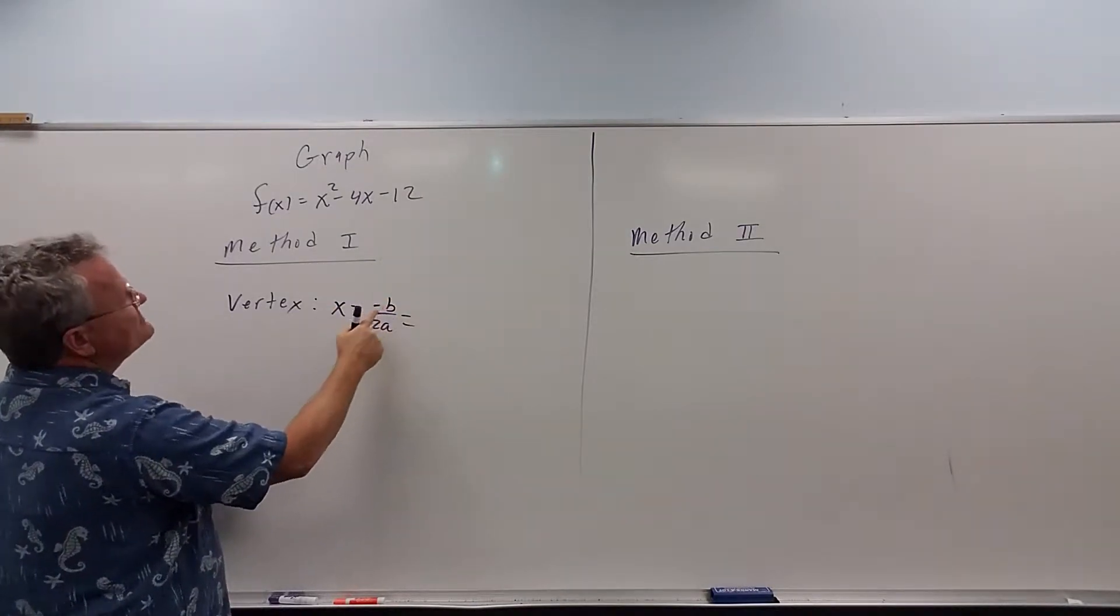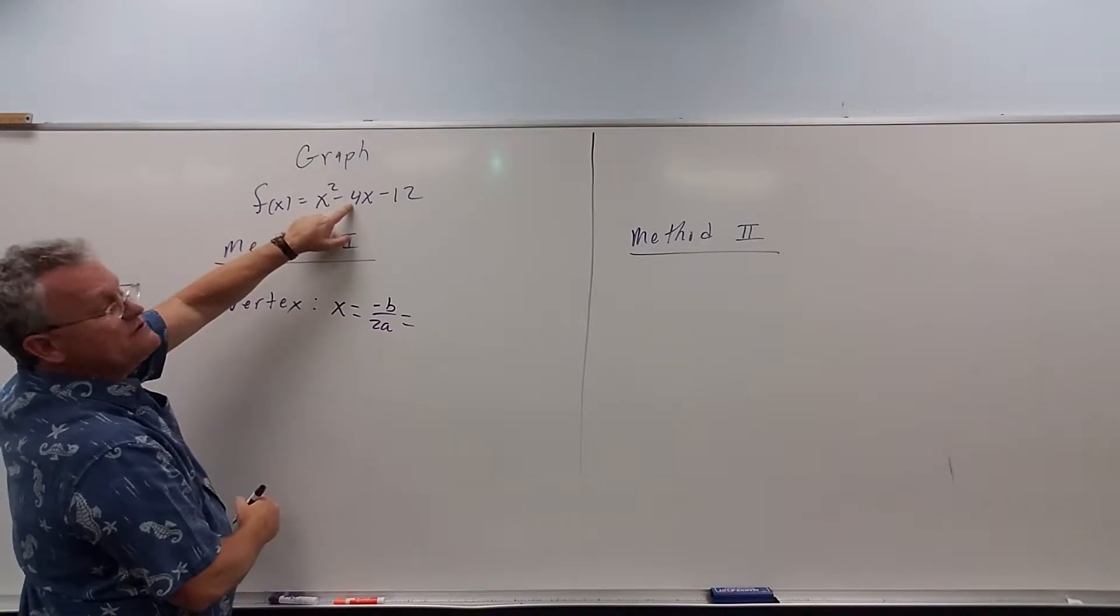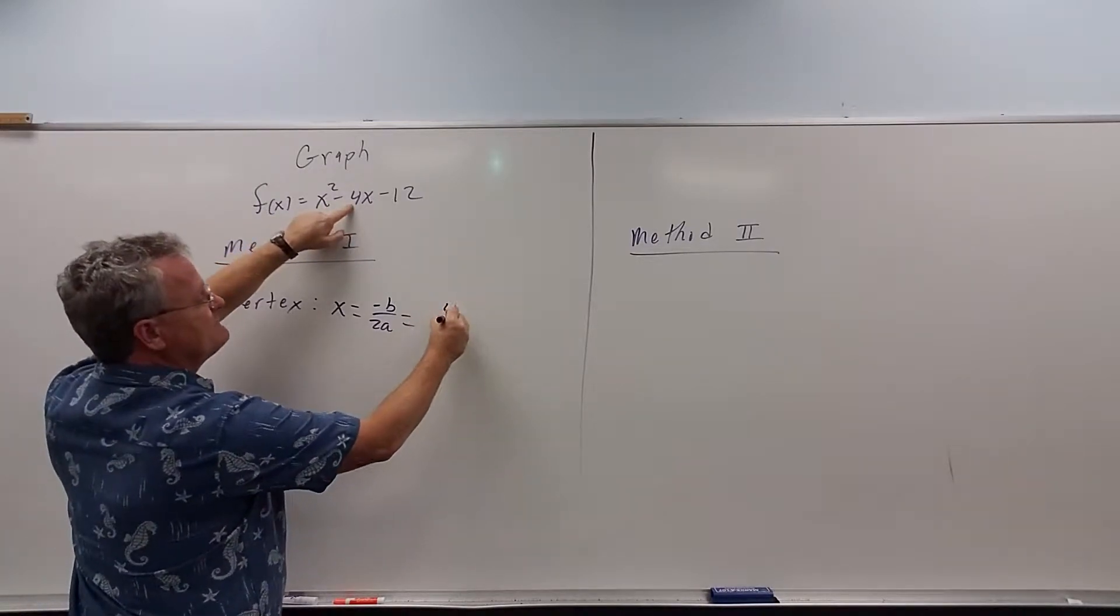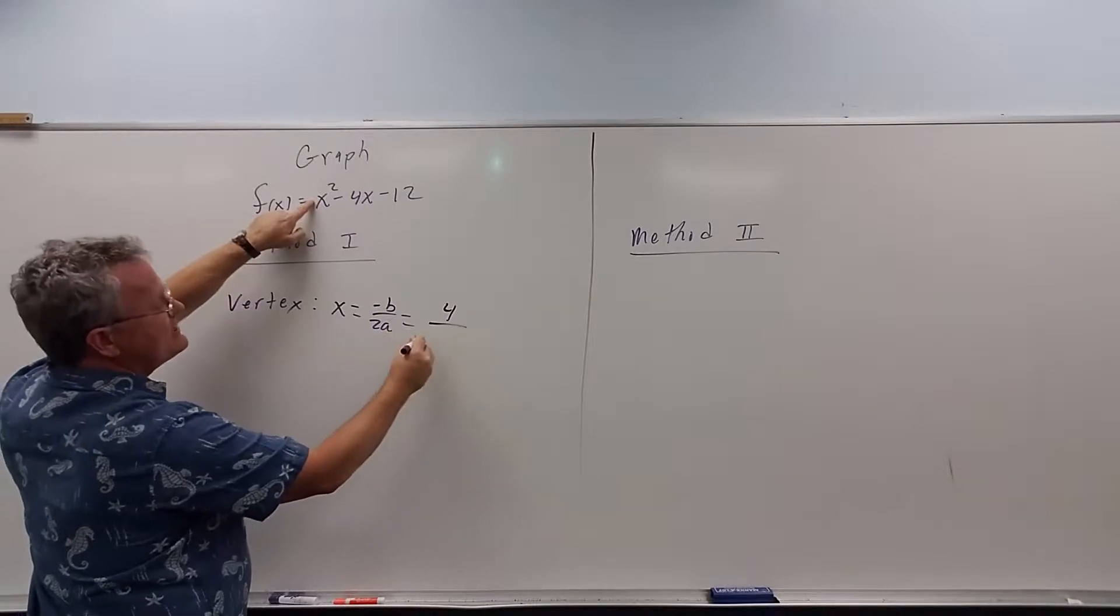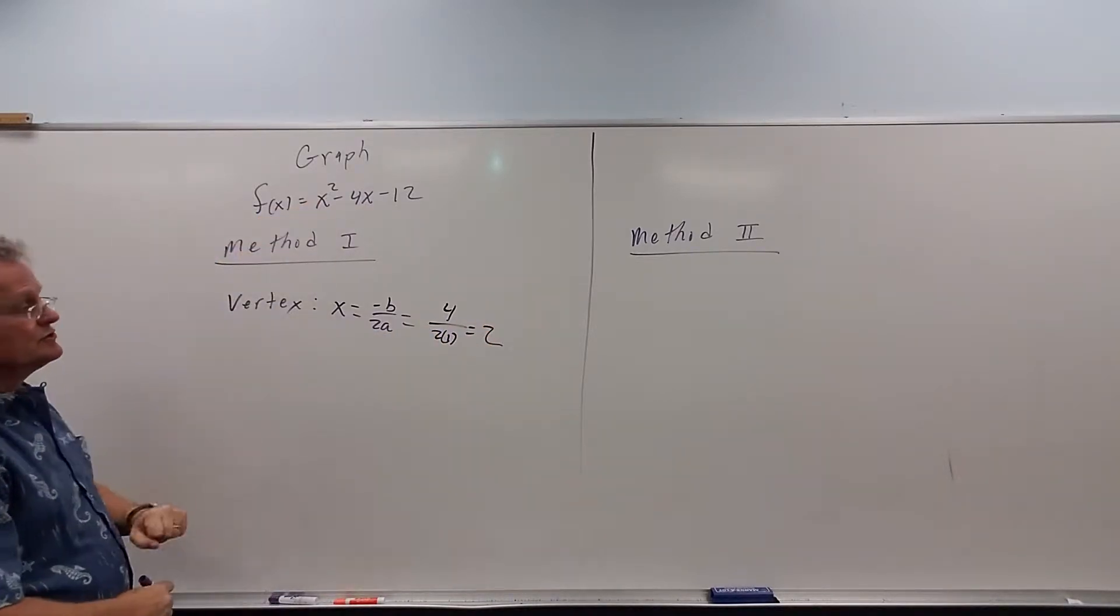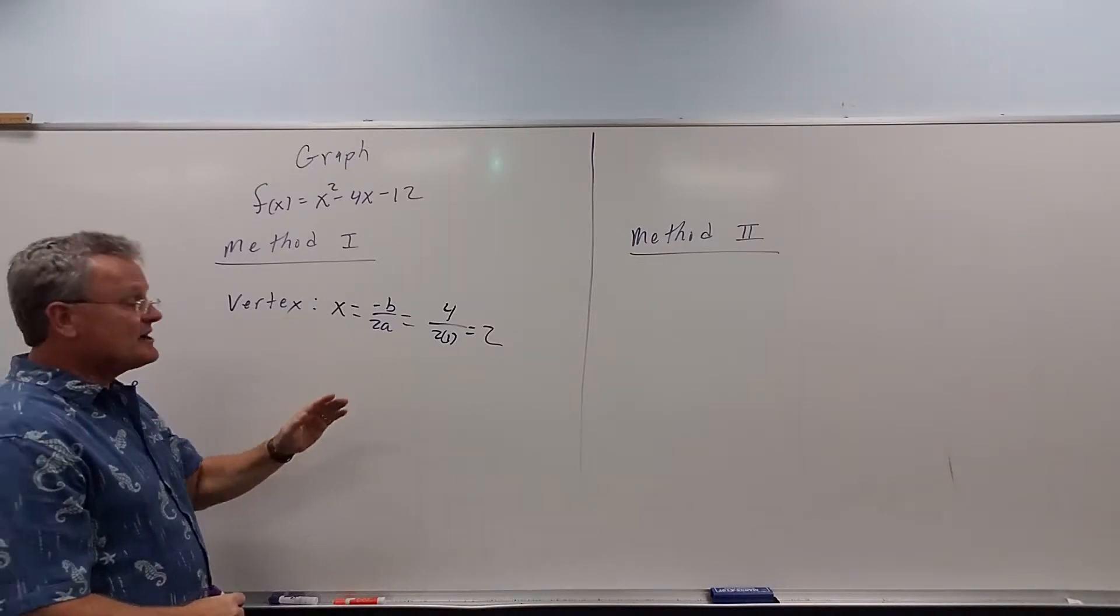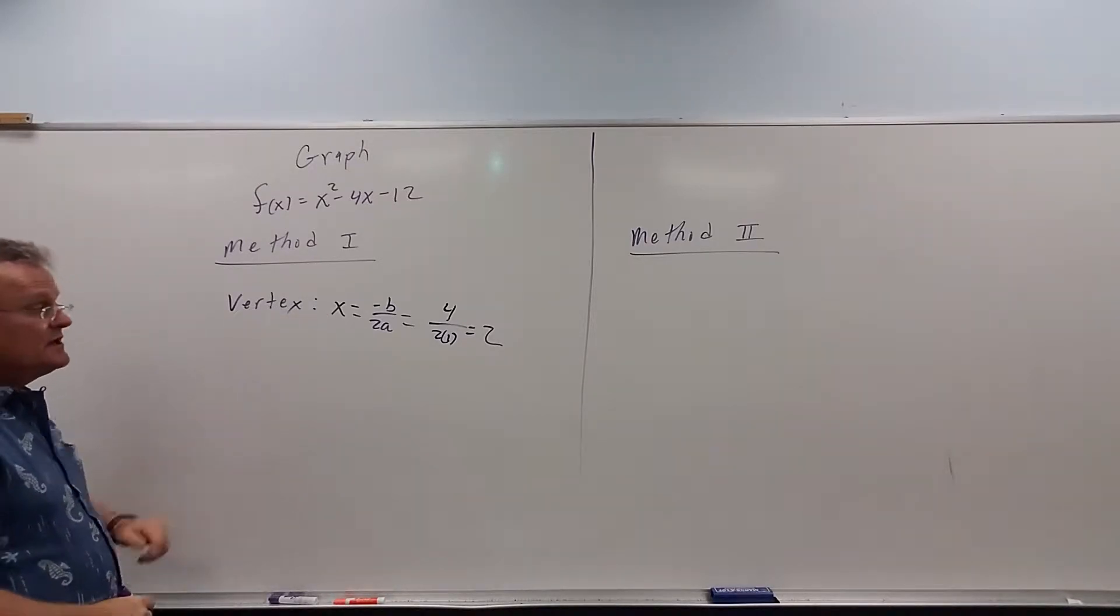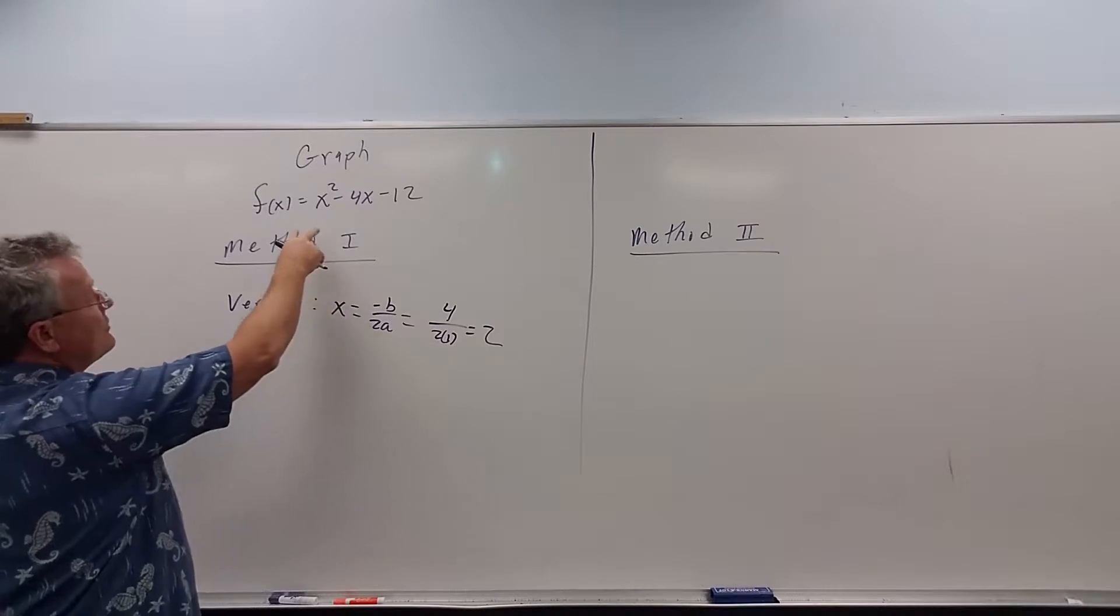The opposite of b, the opposite of negative 4, is positive 4, over 2 times a. a is 1. And we get 4 over 2, which is 2. So this is the x-coordinate of the vertex.